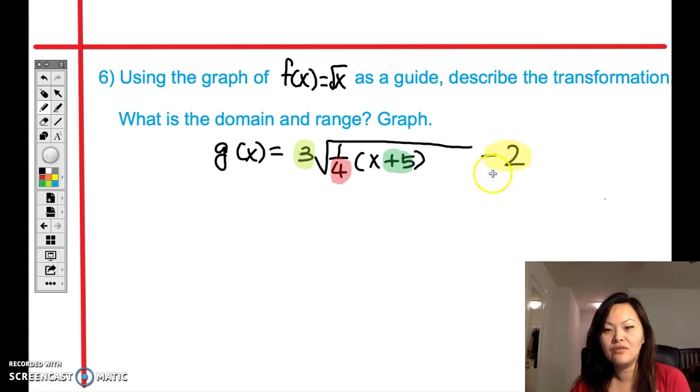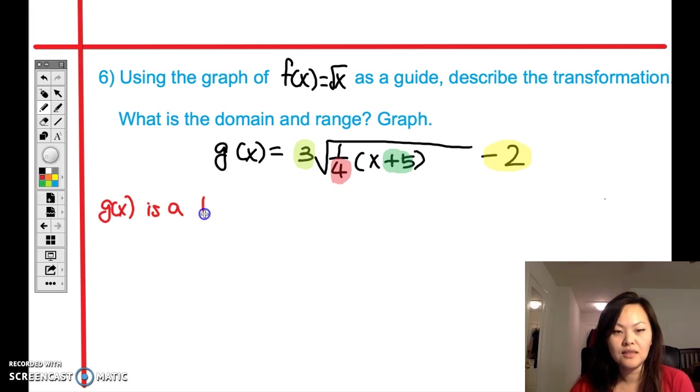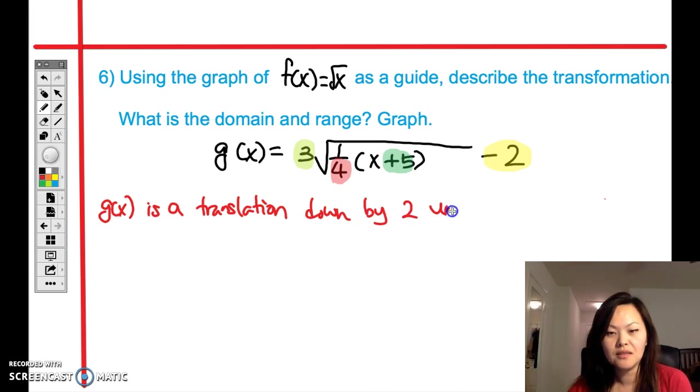So the negative 2 means g of x moved down by 2 units. It's a translation down, and you have to write it exactly like this. So that means basically if I understand that you said g of x moved down by 2 or something like that, I'm good. Translation down by 2 units.